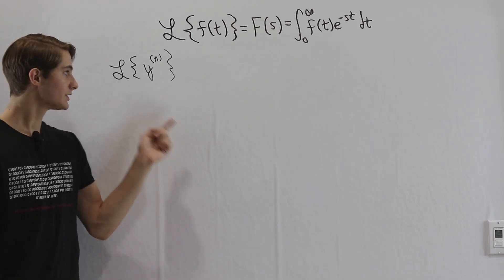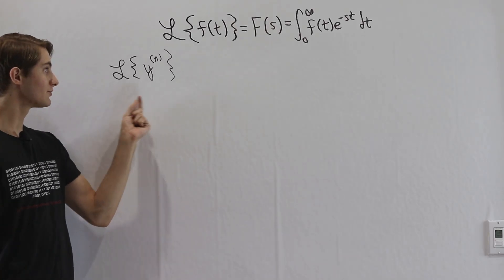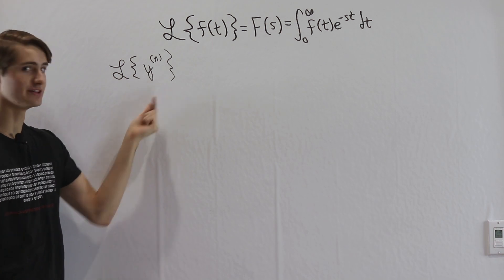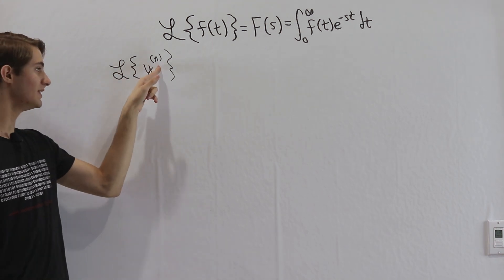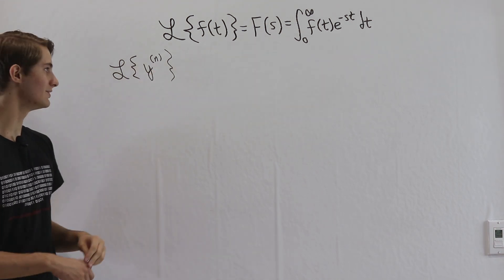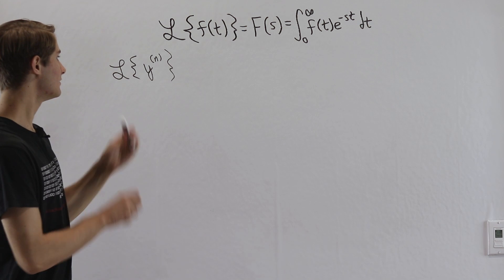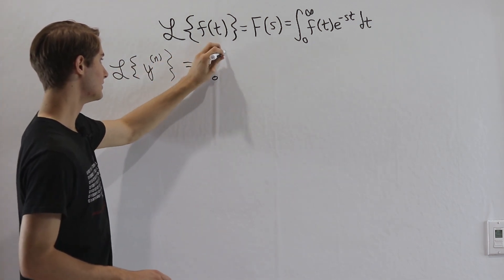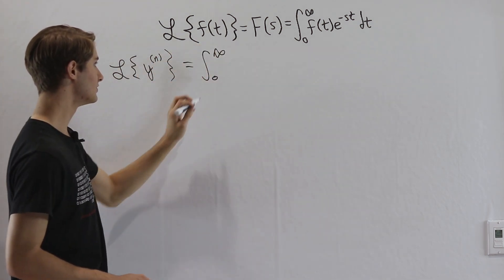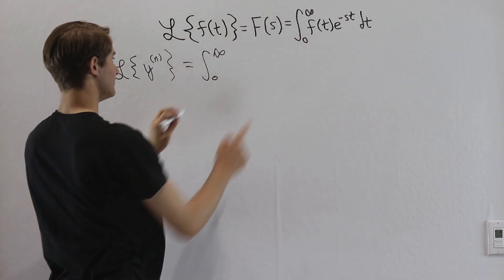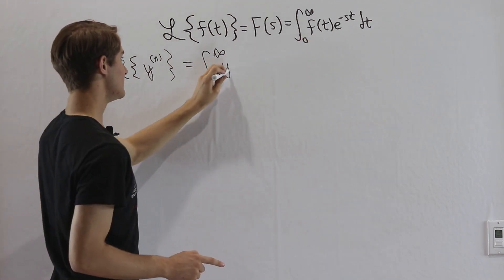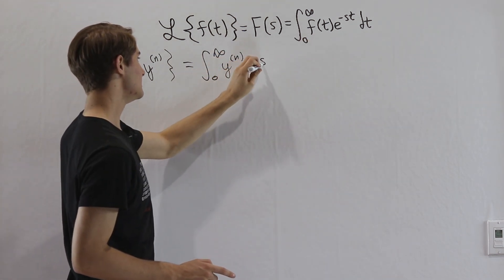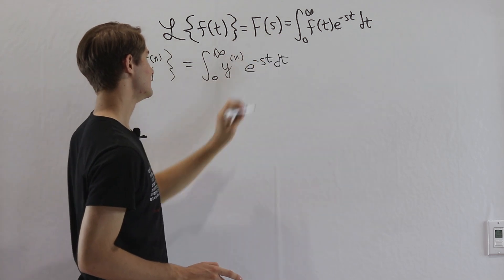We're going to take a look at the Laplace transform of the nth derivative of y with respect to t, which we'll write as y with an n in parentheses. We can start out by taking a look at the integral definition: the integral from 0 to infinity of f of t — which is the nth derivative of y — multiplied by e to the negative st dt.